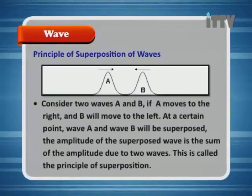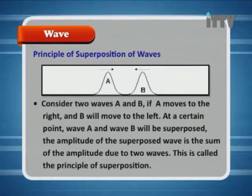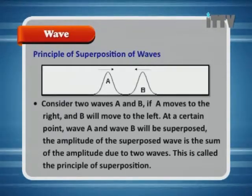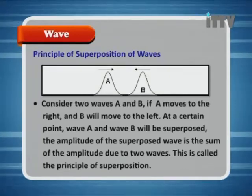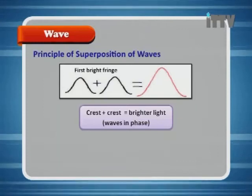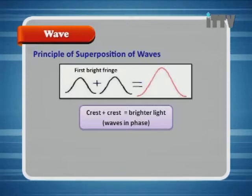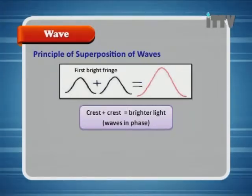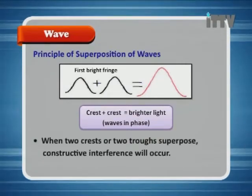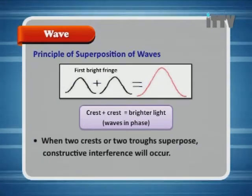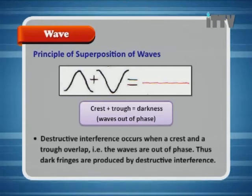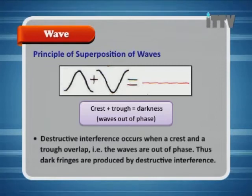Consider two waves A and B. A moves to the right and B moves to the left. At a certain point, wave A and B will be superposed, because the amplitude of the superposed wave is the sum of the amplitudes due to the two waves. This is called the principle of superposition. When you get a bright fringe, two waves are moving towards each other — a crest plus a crest, or a trough plus a trough, will equal brighter light. The waves are in phase, so two crests or two troughs superpose and constructive interference will occur. Destructive interference occurs when a crest and a trough overlap, i.e., the waves are out of phase. Thus, dark fringes are produced by destructive interference.